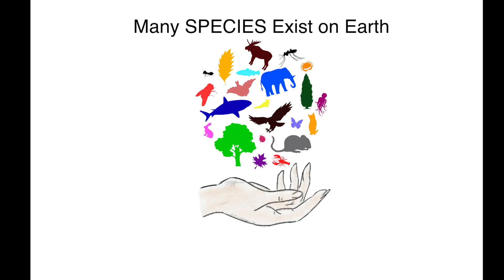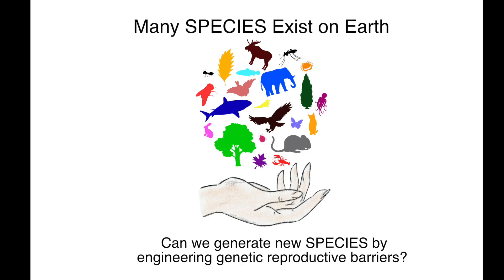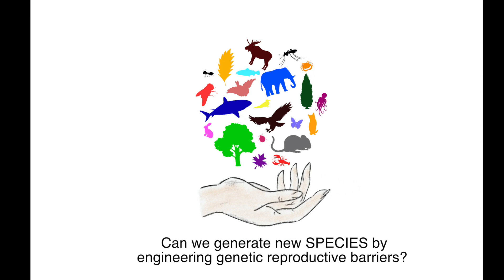Many species exist on Earth. Can we generate new species by engineering genetic reproductive barriers?